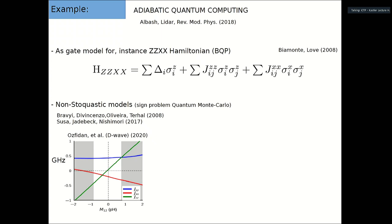For this reason, people were looking for non-stoquastic models — something not so complicated but which still gives you some guarantee of a quantum advantage over classical computers. Those quantum models exhibit the sign problem, so you cannot do the computation with quantum Monte Carlo, and that eliminates Monte Carlo as a direct competitor of your quantum annealer or adiabatic computer.